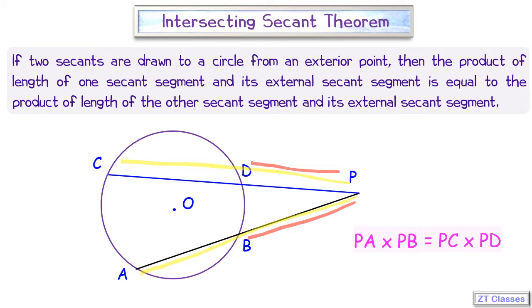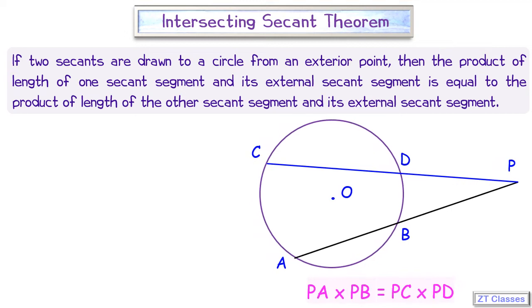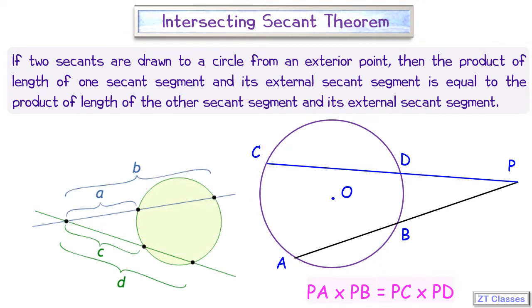If we'll see this diagram again, then here in this circle the two secants are there and these two secants are intersecting each other at external point. Here in this, the length of CD, C into D, will be equals to length of A into B.